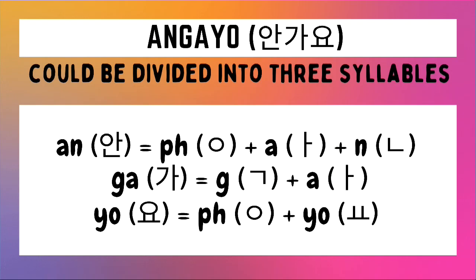Let's study how to write Angkayo in Hangul. This is composed of three syllables. The first syllable, AN, is formed by the combination of a no-sound ieung, an A character, and a nieun character. The second syllable, GA, is formed from the combination of a giyok character and an A character. The last syllable, YO, is formed from the combination of a no-sound ieung and a YO character. We just combine the Hangul for each of these three syllables to form the Hangul of the word Angkayo.